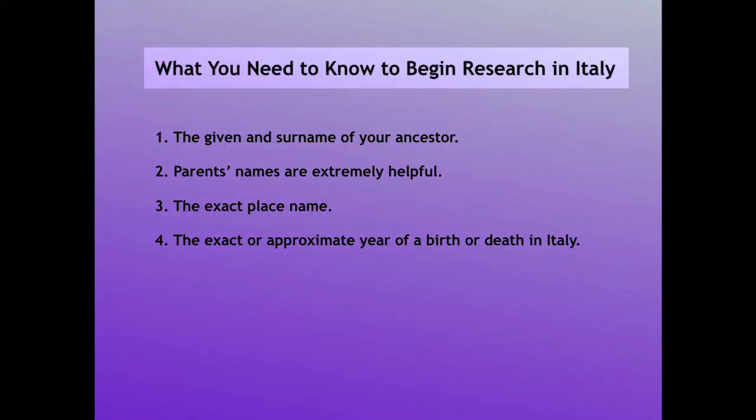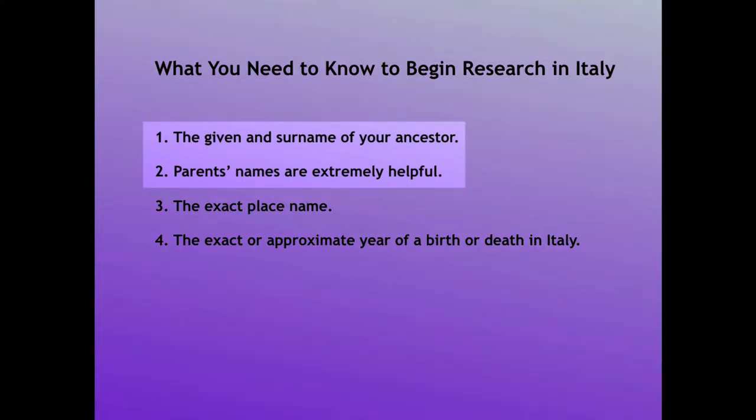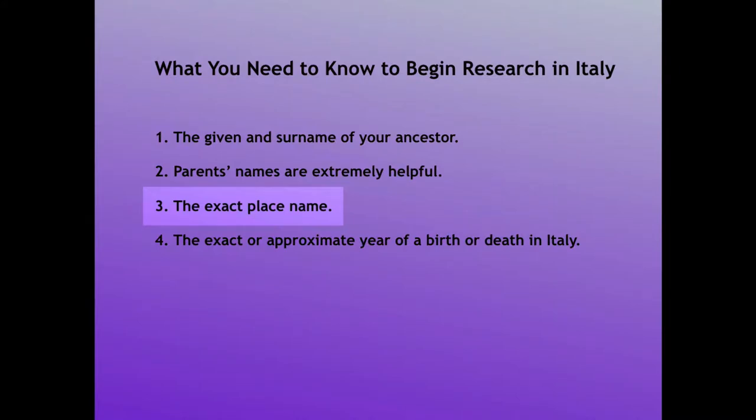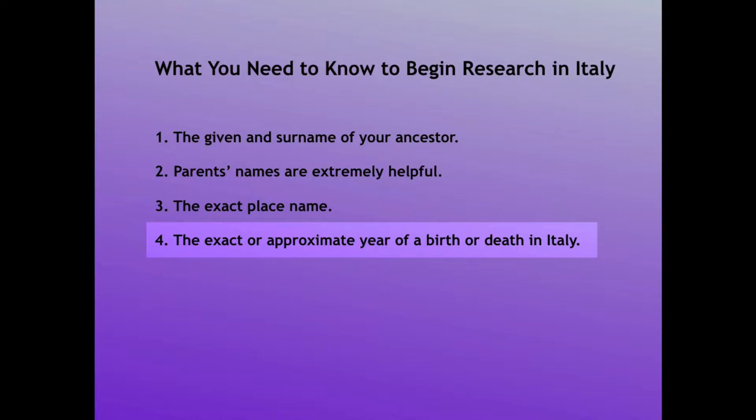When tracing an Italian immigrant back to Italy, you will need certain information to correctly identify him in the records of Italy. Of course, his name, but the parents' names would be really helpful too. You will need to know the exact town that he came from and at least an approximate time of an event that would have taken place in Italy, such as a birth, a marriage, or a death.